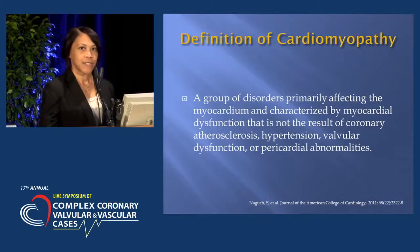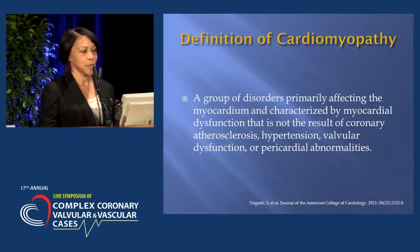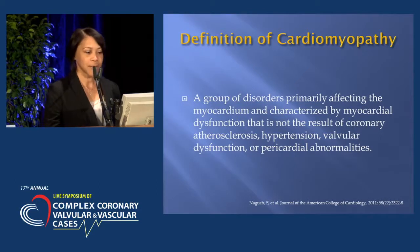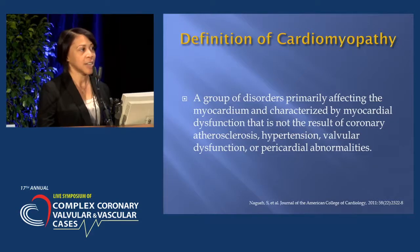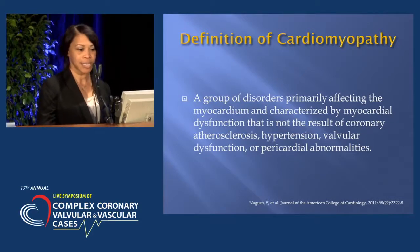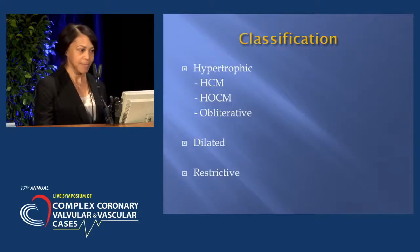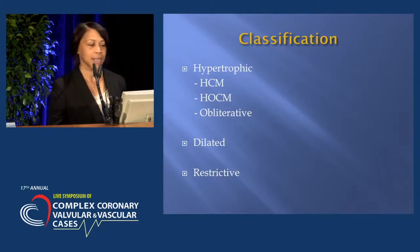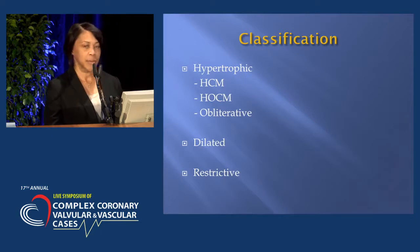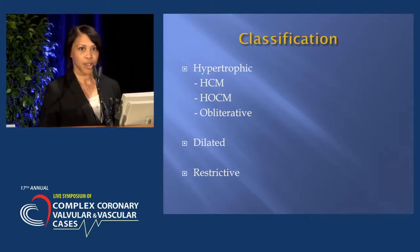The definition of cardiomyopathy is a group of disorders primarily affecting the myocardium and characterized by myocardial dysfunction that is not the result of coronary atherosclerosis, hypertension, valvular dysfunction, or pericardial abnormalities. There are certain classifications: hypertrophic, which includes hypertrophic cardiomyopathy, obstructive, and obliterative.